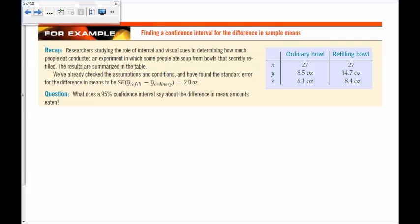Here is a quick example of finding a confidence interval for the difference in sample means. Researchers are studying the role of internal and visual cues in determining how much people eat, and they conducted a survey in which some people ate soup from bowls that secretly refilled. They're testing to see how much more those people ate than the people who finished their bowl, looking at visual versus internal cues in determining how much people eat. They're looking at the difference, refill minus ordinary, of how much people ate, and we're looking at a 95% confidence interval for this difference. Confidence intervals have four parts. You first check the conditions, and they said they've already done that. The two most important ones are randomization and the nearly normal condition. Because these sample sizes are both 27, it's important that they're roughly unimodal and symmetric.